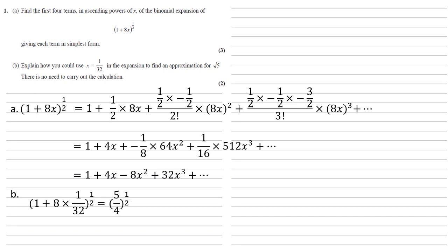So if we substitute 1 over 32 into the (1 + 8x)^(1/2), we get (1 + 8 × 1/32)^(1/2), which is a quarter, all to the power of a half. So this all makes (5/4)^(1/2). Well, that's the same as a half of root 5. We need to find an approximation for root 5. So if we put 1 over 32 into our expansion, we'll get root 5 over 2. We'll just need to multiply that answer by 2.